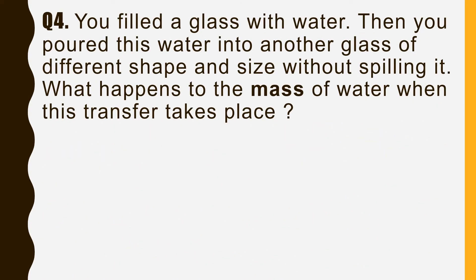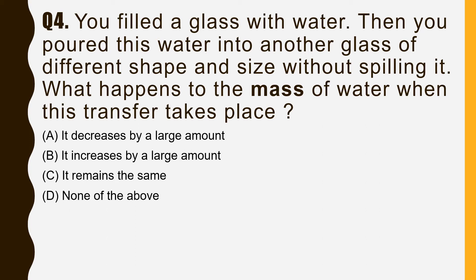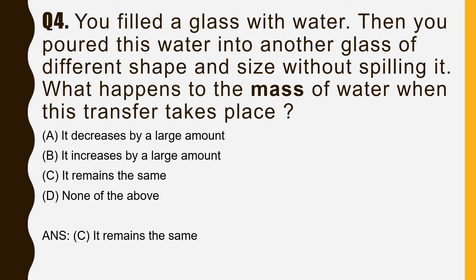The next question: you fill a glass with water, then pour it into another glass of different shape and size without spilling. What happens to the mass of the water? The options are: it decreases, it increases, it remains the same, or none of the above. The correct answer is option C — it remains the same — because liquids have fixed mass and volume but take the shape of the container.